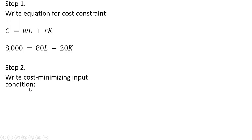Step two: we're going to write the cost minimizing input condition, which is given as the marginal product of labor divided by the wage equals the marginal product of capital divided by the price of capital.